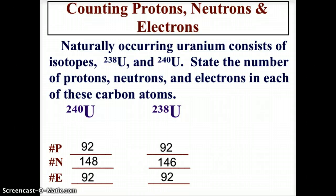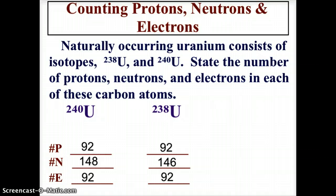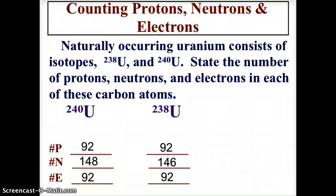Uranium has a proton number of 92 - it is atomic number 92 on the periodic table. For uranium-240 we would need 148 neutrons, because 92 plus 148 equals 240. Uranium-238 would have 146 neutrons. In both cases the electron number equals the proton number because we're dealing with neutral atoms. So isotopes are atoms of varying mass numbers of the same element; the proton number stays consistent at 92 and the neutron number changes, thereby changing the mass.